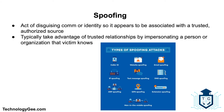Spoofing is the act of disguising a communication or identity so that it appears to be associated with a trusted, authorized source. Spoofing attacks can take many forms, from common email spoofing attacks deployed in phishing campaigns to caller ID spoofing attacks often used to commit fraud. Attackers may also target technical elements of an organization's network such as an IP address, DNS server, or ARP service. Spoofing attacks typically take advantage of trusted relationships by impersonating a person or organization that the victim knows. If the user is unaware that internet communications can be fake, they are especially likely to fall prey to a spoofing attack.